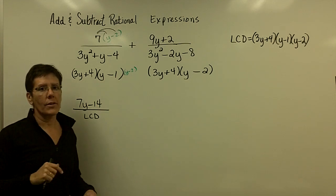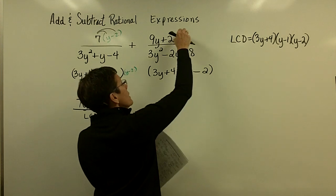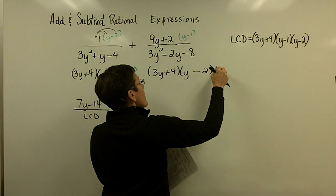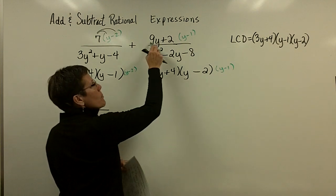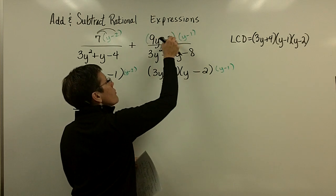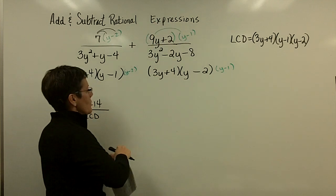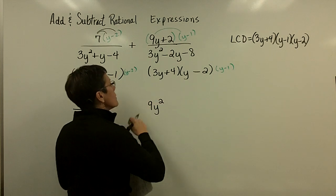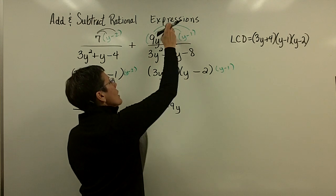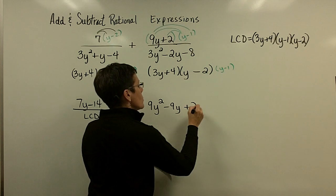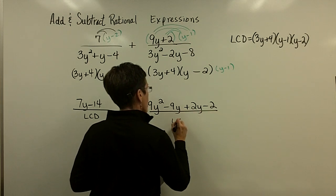This one has the 3y+4 and the y-2, but it doesn't have the y-1. So, this up here has to be multiplied by the y-1. Don't forget, it's going to become part of the common denominator. This is where people make a mistake. This is a binomial. It needs to be foiled through that binomial. So, 9y times y is 9y². And then, 9y times a minus 1 is a minus 9y. And if you can do this in your head, that's cool. 2 times y is 2y. And 2 times a minus 1 is a minus 2 over the LCD.